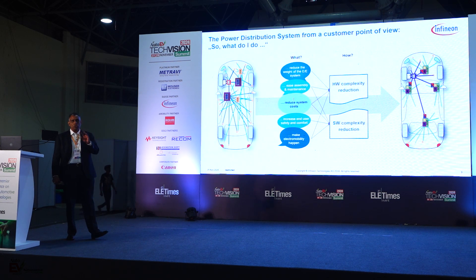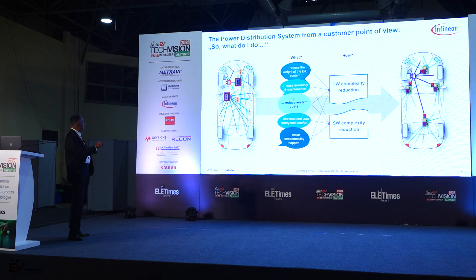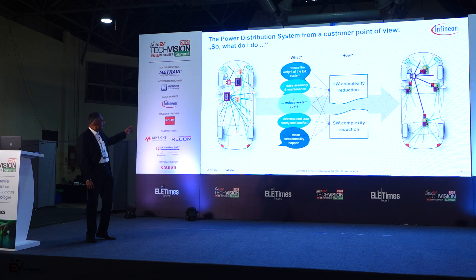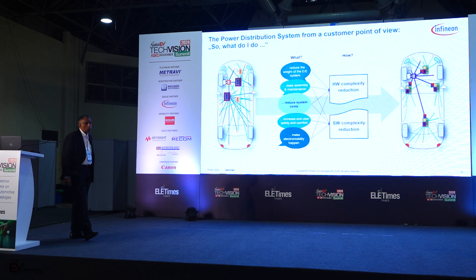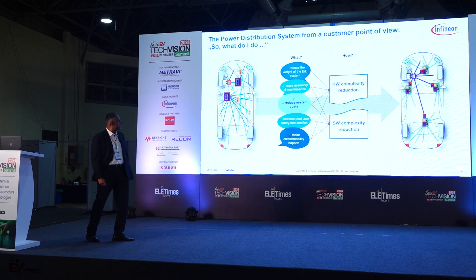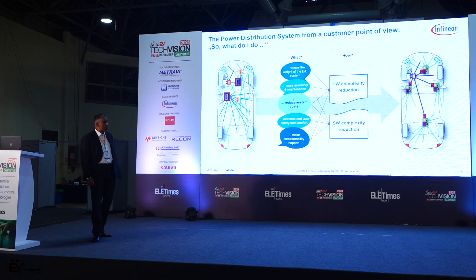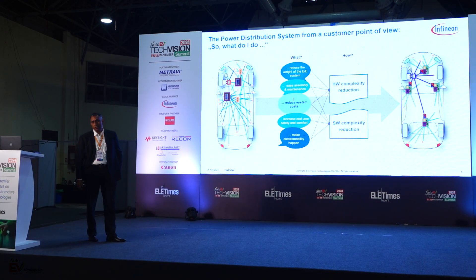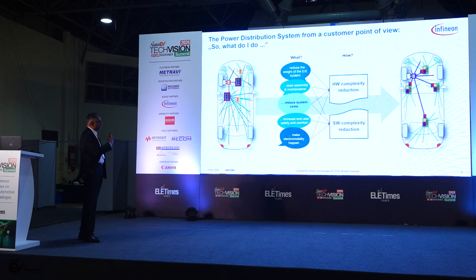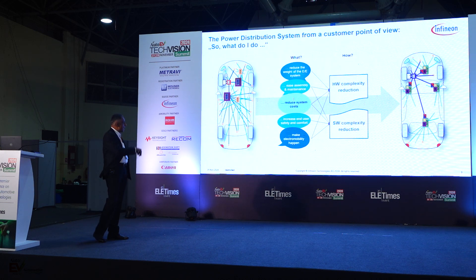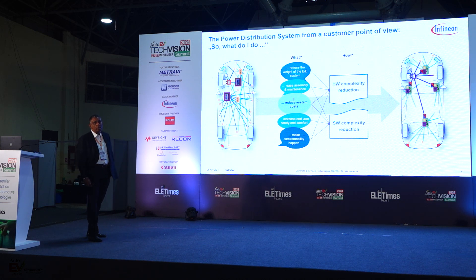Now let's talk about the power distribution point of view. You have the DCU, and then there are various aspects. One of the key things in terms of e-architecture today is reducing hardware complexity and, very importantly, software complexity reduction. Lata just talked about millions of lines of code, and essentially this has to be reduced. As a result, the new e-architectures coming into the market are helping address this.